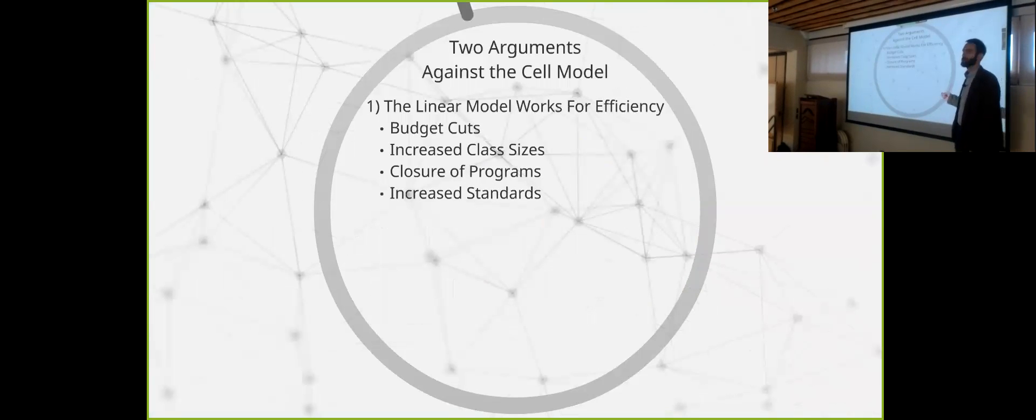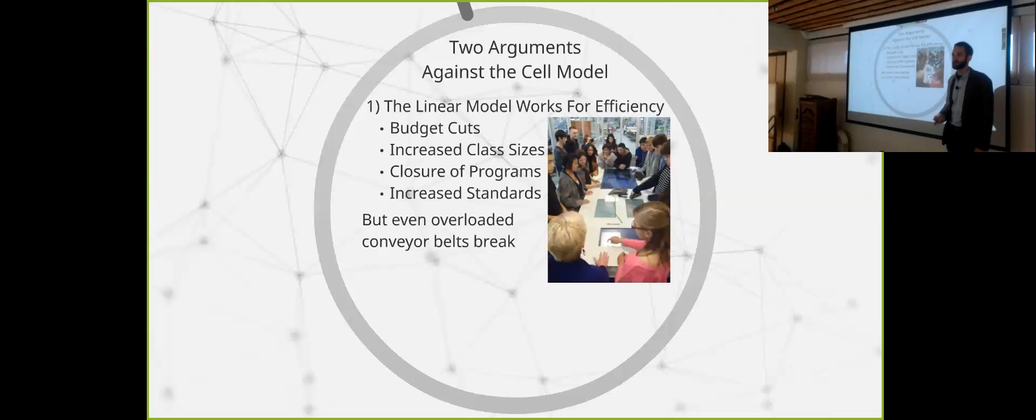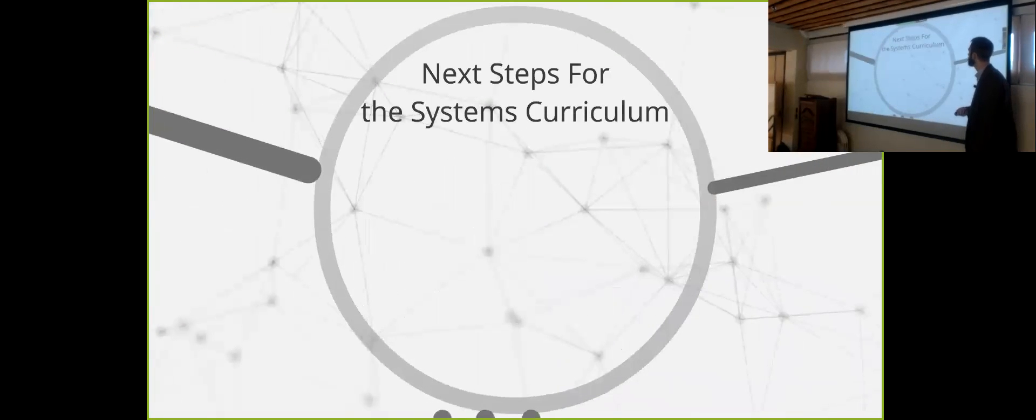Two arguments against the cell model. The linear model works very efficient. And especially in the light of budget cuts, increased class sizes, closure of programs, increased standards. You're going to be blowing up classroom sizes. I don't know how a web systems construct can work in classes of 30 or 40 kids. But I do want to argue one thing that even overloaded conveyor belts will break. Digital reliance. I did a lot of media technology. I find it very ironic that I handed out worksheets. I never handed out worksheets. But I didn't have laptops. So ironic. That was irony. But one thing that Richard Louv introduced is the idea of the techno-naturalist. That we can use technology as an instrument, a temperate instrument, to bring kids back into nature.